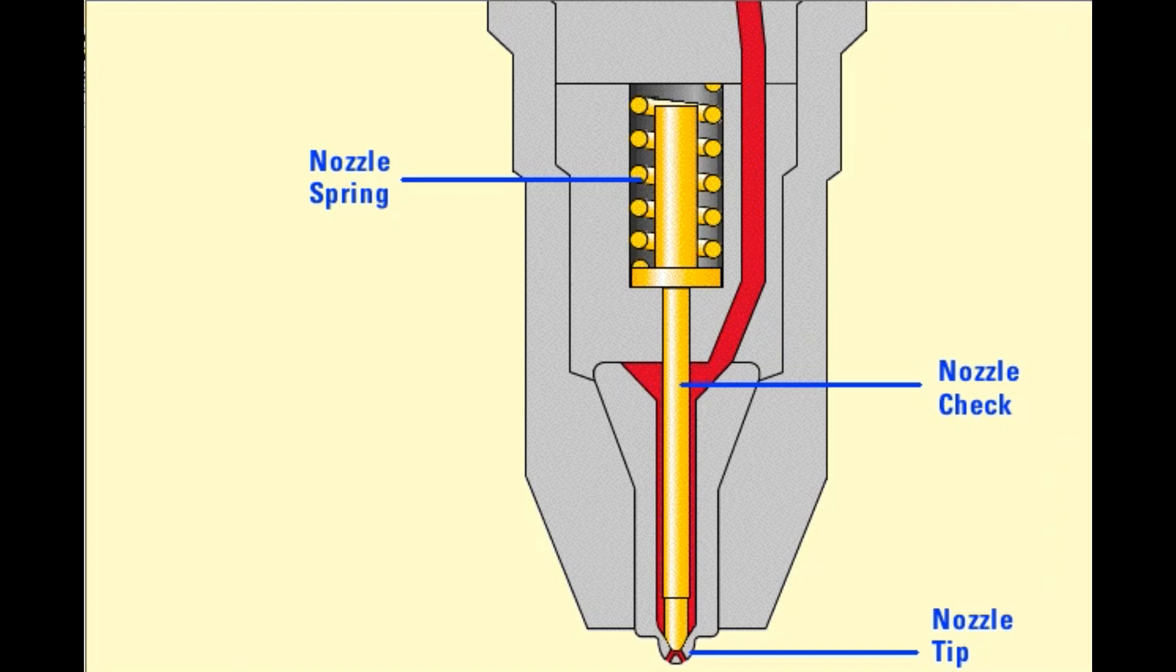When the pressure reaches approximately 38 megapascals or 5,500 psi, the force of the high-pressure fuel overcomes the spring tension holding the nozzle check closed. The check lifts off its seat and fuel flows out of the orifice holes in the nozzle tip. This is the start of injection.